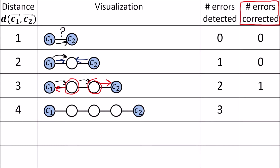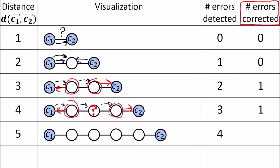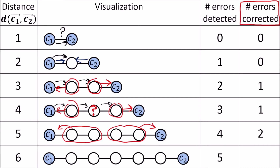For distance four we can detect up to three-bit errors but we can still only correct one bit — if two-bit errors happen, since this is halfway between C1 and C2, we can't do any corrections because we can't tell where it came from. With distance five we can detect four-bit errors and correct two-bit errors, and distance six we can detect five-bit errors and correct two-bit errors.